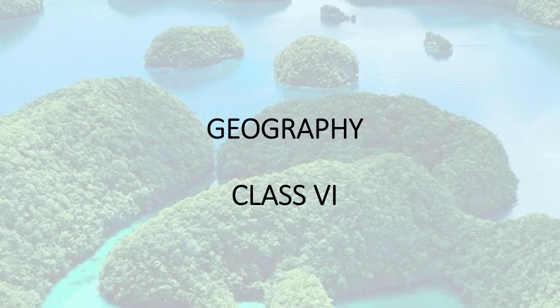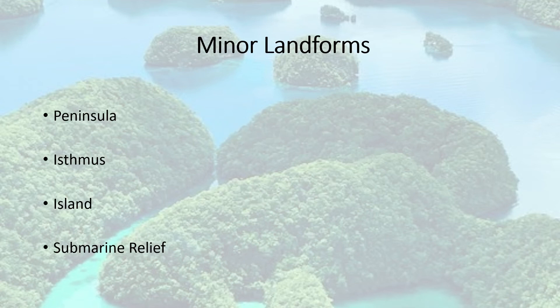This is Geography for Class 6. We are continuing with the chapter Major Landforms, and this is the subtopic Minor Landforms, which deals with Peninsula, Isthmus, Island, and Submarine Relief. Please be attentive.